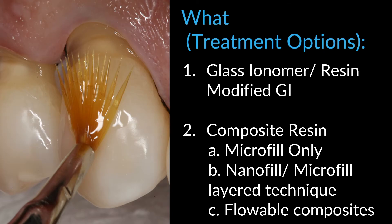One of the options many dentists like to use are flowable composites, and I want to talk about why I don't like flowable composites for these class fives. The advantage is that they're easy to flow into the lesion. But the downside: number one, with flowable composites the filler content is much lower than traditional composites. That means you're going to get a higher wear rate, poor polishability, and faster marginal breakdown of the material.